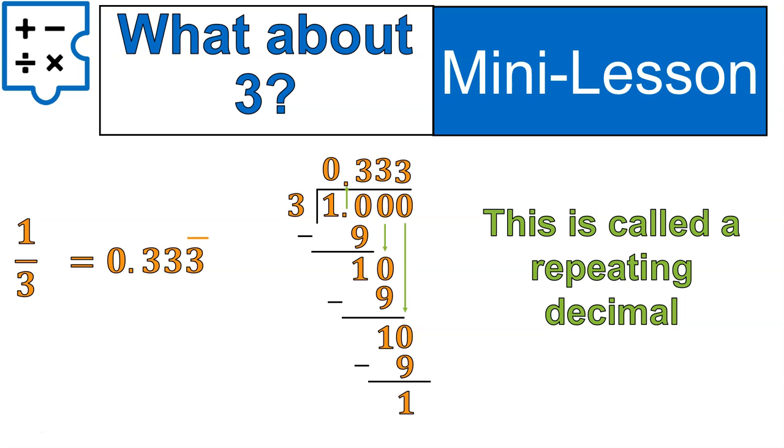This is called a repeating decimal. So there are two types of decimals we're talking about today: repeating decimals and terminating decimals. Terminating decimals stop. Repeating decimals continue to repeat over and over and over. And they may repeat one number like this, or they might have a repeating pattern. But either way, they repeat infinitely. So we use that line to kind of indicate that.